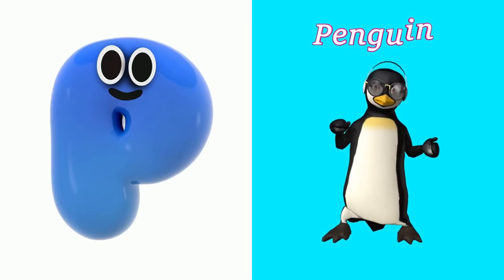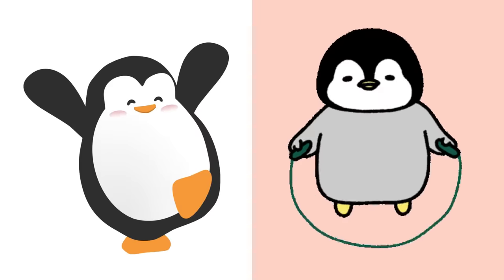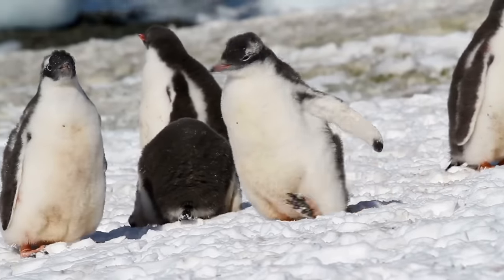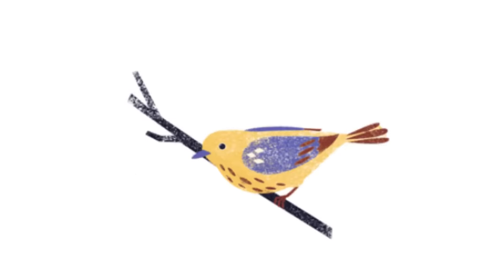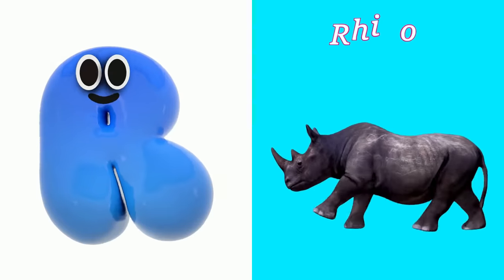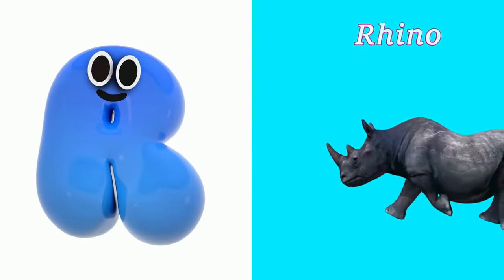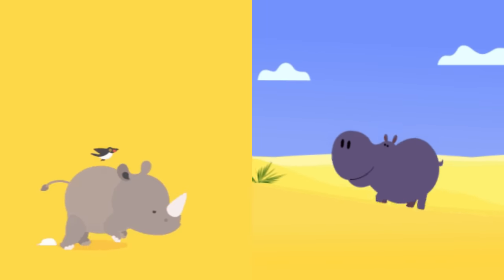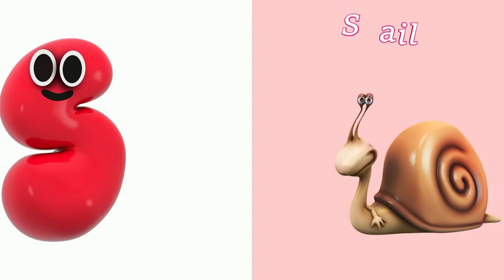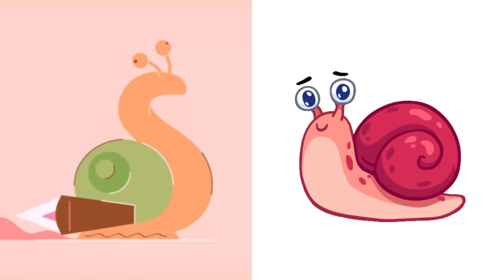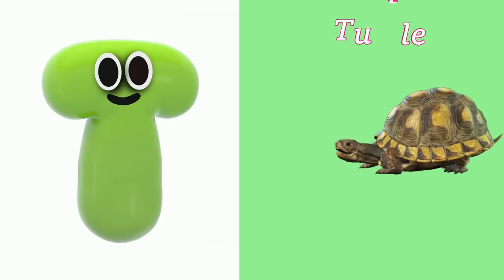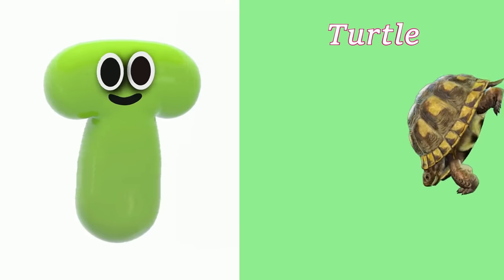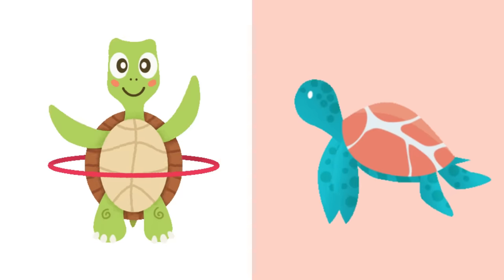P is for Penguin. P, P, Penguin. Q is for Quail. Q, Q, Quail. R is for Rhino. R, R, Rhino. S is for Snail. S, S, Snail. T is for Turtle. T, T, Turtle.